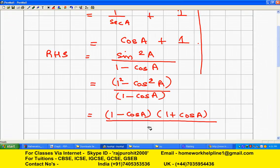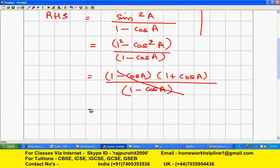This is written of the form (a - b)(a + b) upon (1 - cos A). The (1 - cos A) gets cancelled. This becomes 1 + cos A, which is equal to LHS.